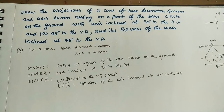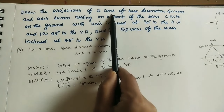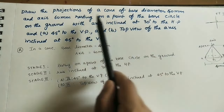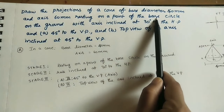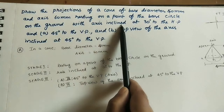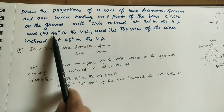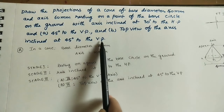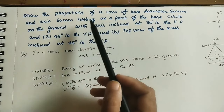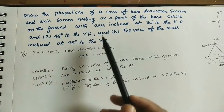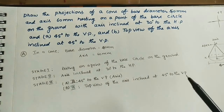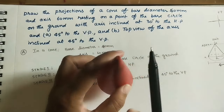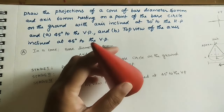Hi friends, welcome to my channel. Let us discuss how to draw the projections of a given cone. The question is: draw the projections of a cone of base diameter 40mm and axis 60mm, resting on a point of the base circle on the ground, with axis inclined at 30 degrees to the HP. A cone is a solid with one circular base and one point called the apex.